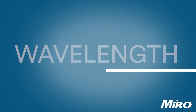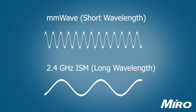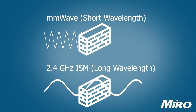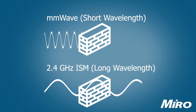Wavelength is the distance between successive peaks or troughs of a wave and is inversely proportional to the frequency, meaning the higher the frequency the shorter the wavelength, and the lower the frequency the longer the wavelength. Longer wavelengths have inherently better propagation characteristics, meaning they travel further through both free space as well as path obstructions such as walls and trees. This leads to real-world range limitations when dealing with millimeter wave and extremely strict line-of-sight requirements, though this isn't necessarily a bad thing, as we'll discuss later in this video.